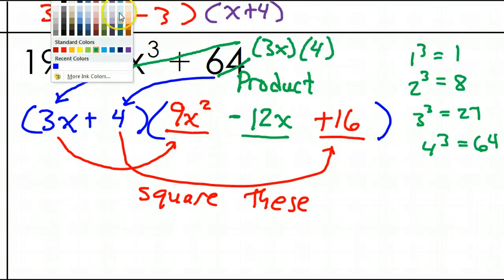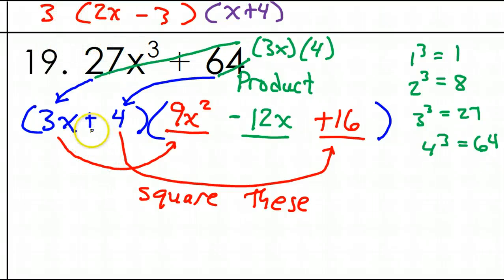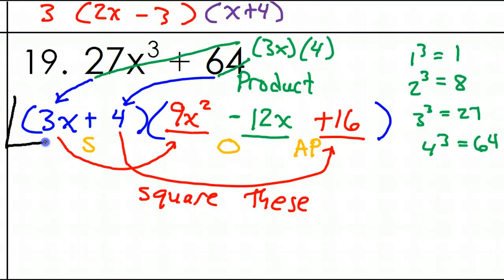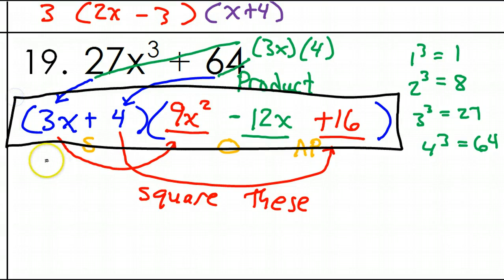If you need the acronym to help you remember, here it is. The SOAP refers to the three signs that show up in these problems. This first sign is always the same as the original problem. This second sign is always the opposite of the original problem. And the third sign is always positive. So, that spells SOAP. Same, opposite, always positive. But at any rate, this is your final answer. Right in here.